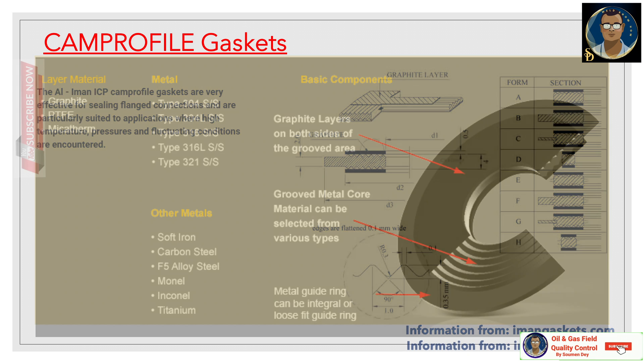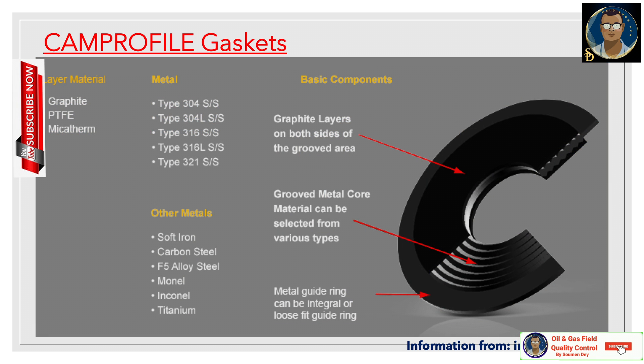You can see the basic components of cam profile gaskets in this cross section. The layered material can be graphite, PTFE, or microtherm. The metallic portion can be stainless steel type 304, 304L, 316, 316L, or 321 SS. Other metals that can be used for the metallic portion include soft iron, carbon steel, A5 alloy steel, Monel, Inconel, and titanium. In the picture you can see graphite layers on both sides of the groove area, with a metallic grooved core.